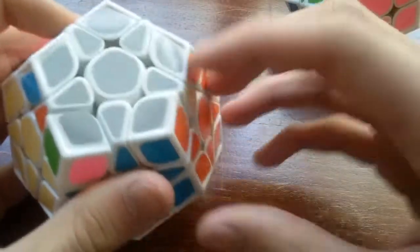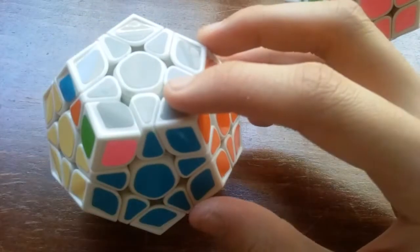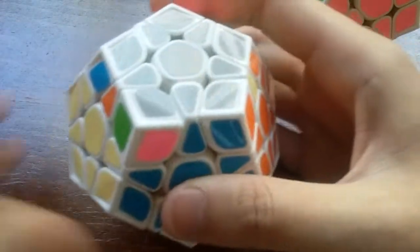So for the case where the blocks are on the right, you would put one block in front and one block in the back and do this algorithm.